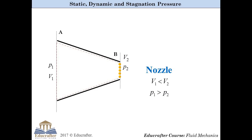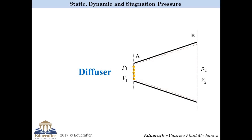But now, look at the variation of flow properties in a diffuser. Pressure at section A is P1, velocity is V1 and at section B, pressure is P2 and velocity is V2.